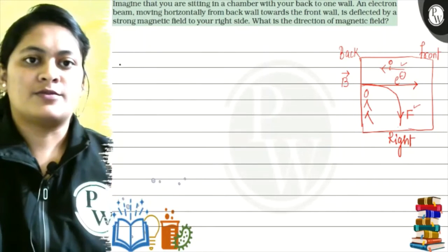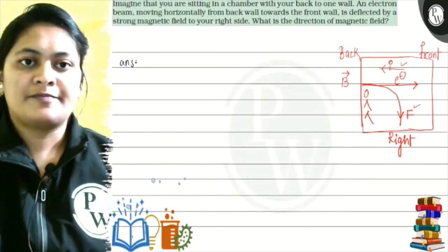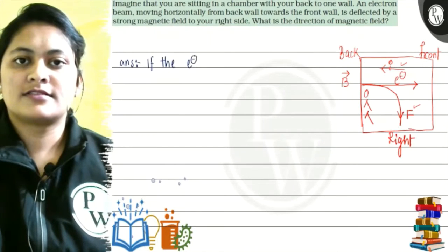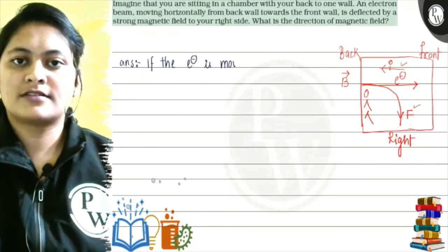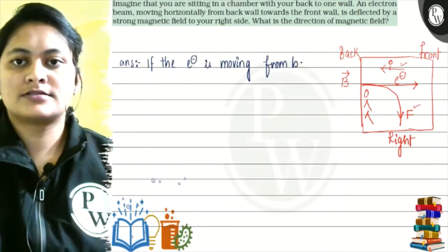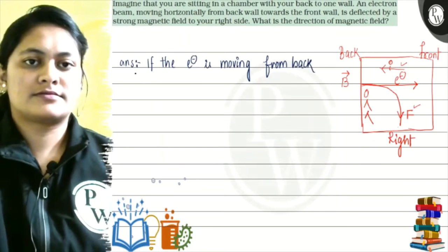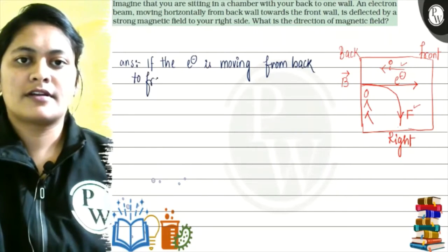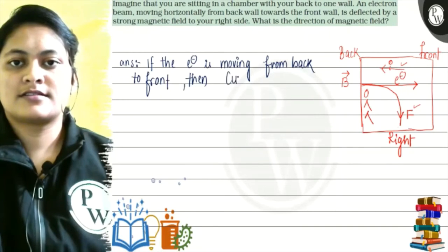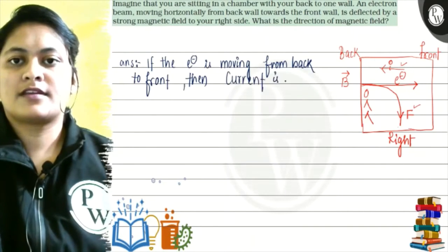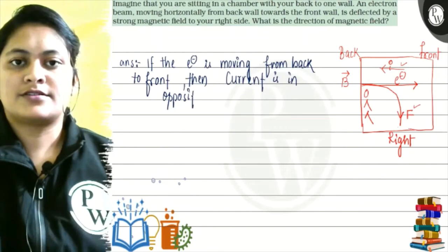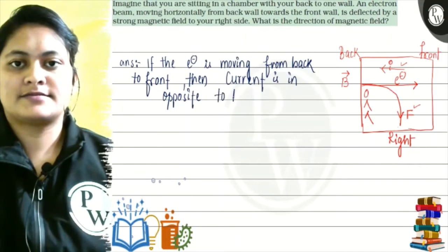So, suppose if the electron is moving from back to front, then current is opposite to that. Current is opposite.